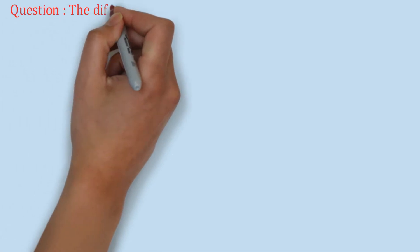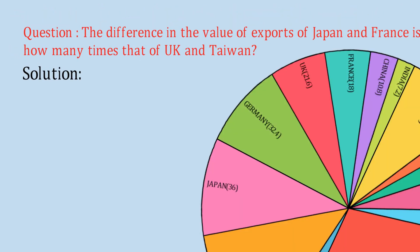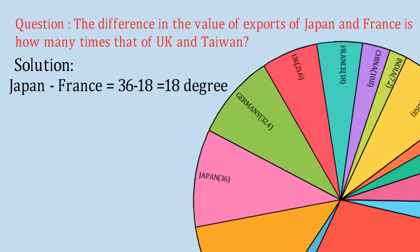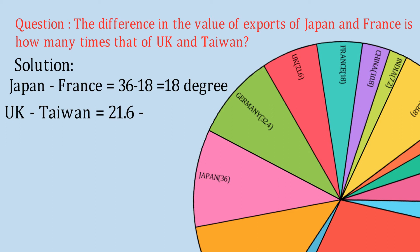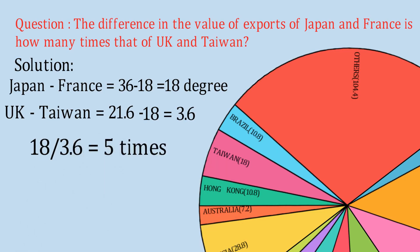The next question asks: the difference in the value of exports of Japan and France is how many times that of UK and Taiwan? We need to find both differences and correlate them. Japan is 36 degrees and France is 18 degrees, so their difference is 18 degrees. For UK (21.6 degrees) and Taiwan (18 degrees), the difference is 3.6 degrees. Dividing 18 by 3.6, the answer is 5 times — very simple!